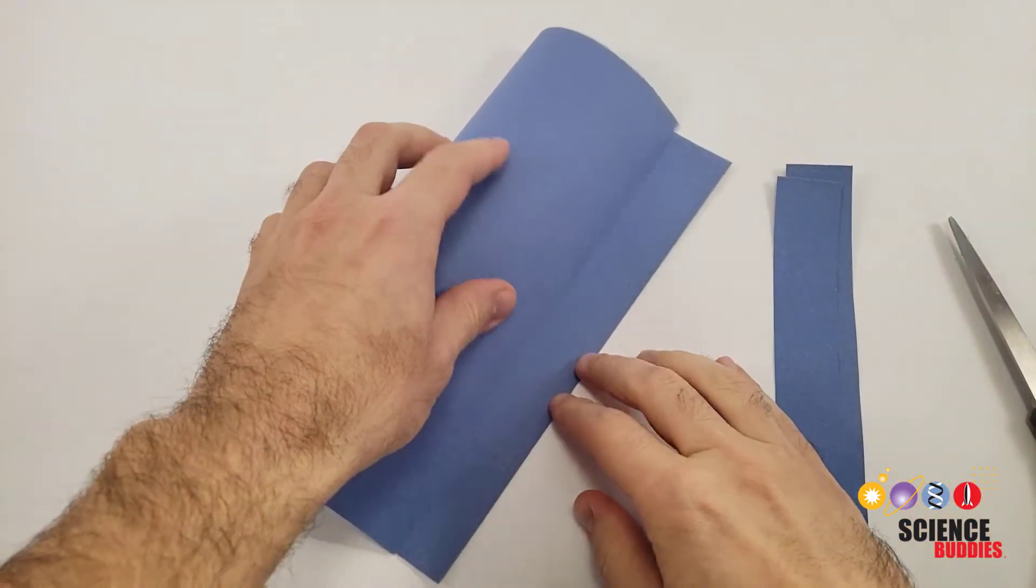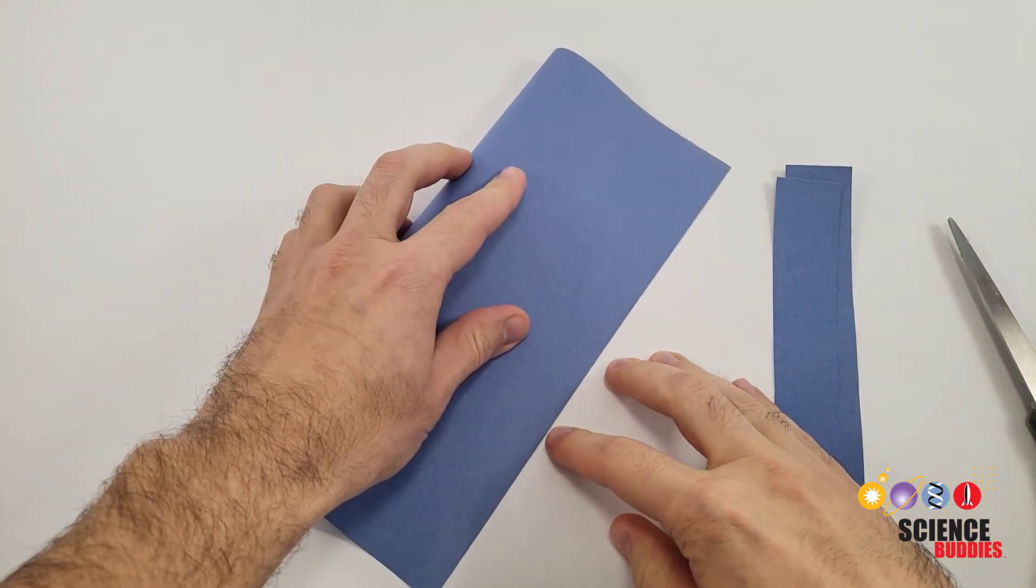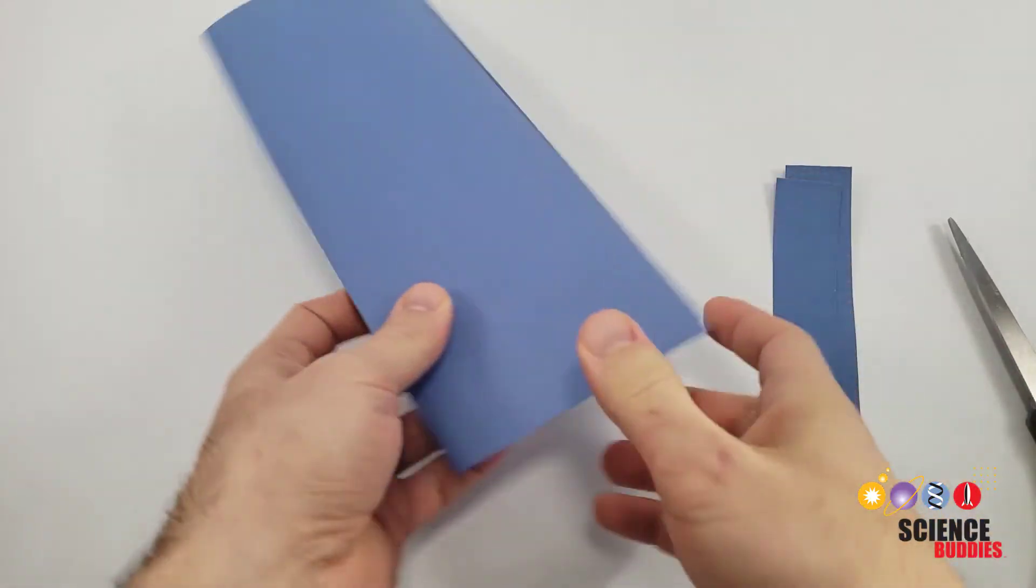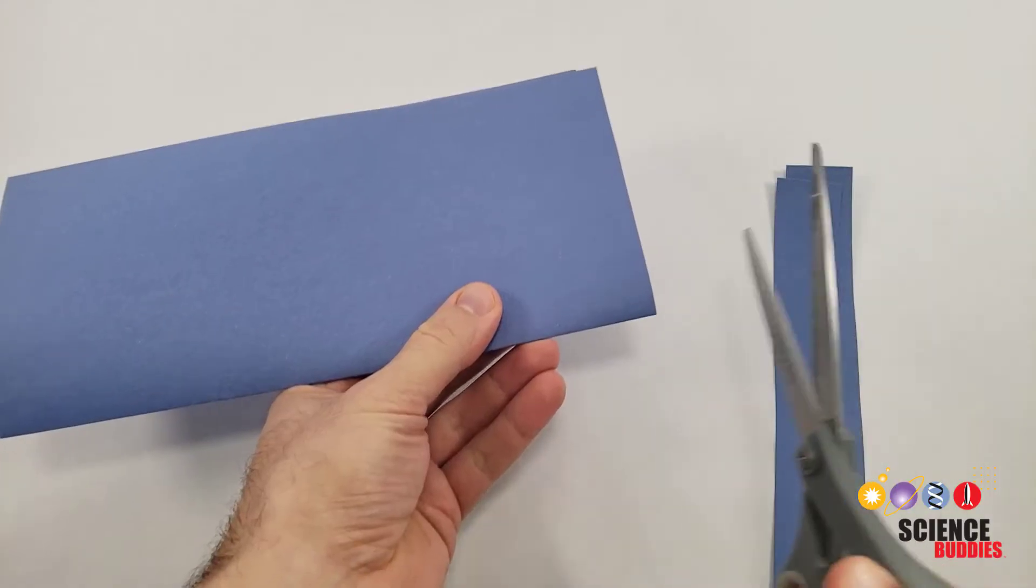Fold the remaining paper in half. Cut slots along the width of the paper.